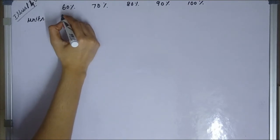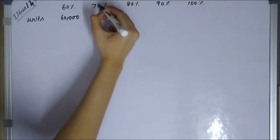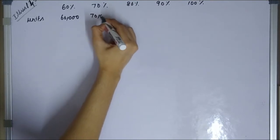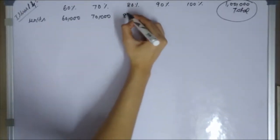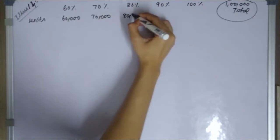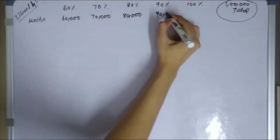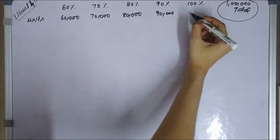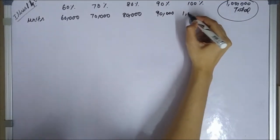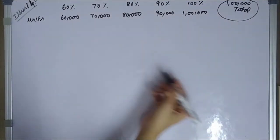The table is set up with unit volumes: 60,000 units, 70,000 units, 80,000 units, 90,000 units, and 100,000 units corresponding to the 60% through 100% capacity levels.